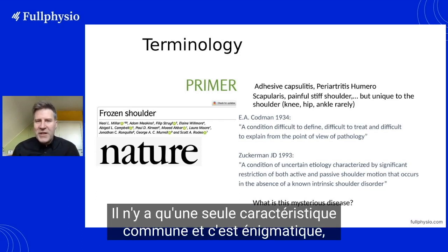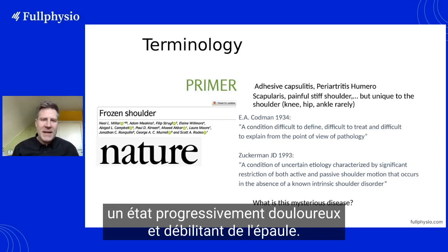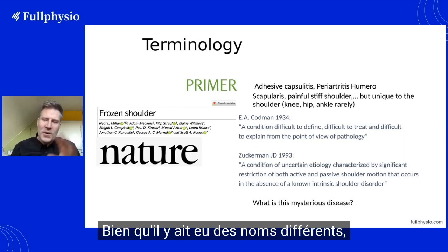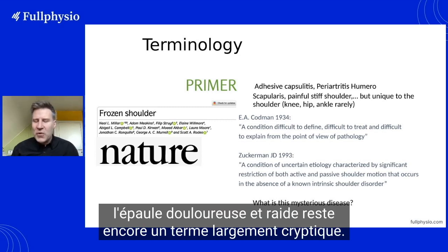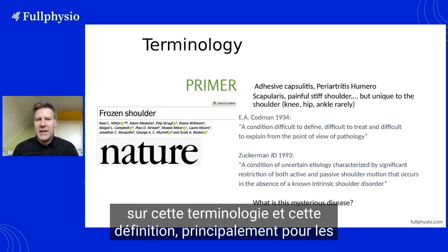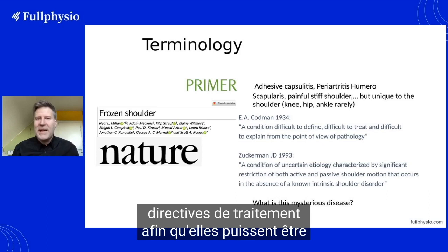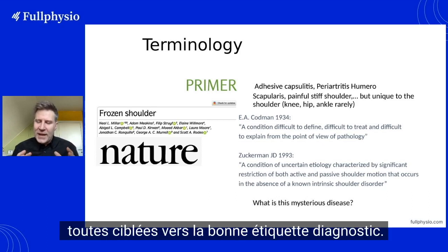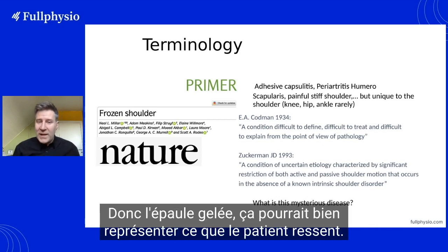There is just one common feature: it's an enigmatic, progressively painful and debilitating condition of the shoulder. Although there were different names, the painful and stiff shoulder still remains a largely cryptic term. It seems essential to gain consensus on this terminology and definition, mainly for treatment guidelines, so that they can all be targeted towards the right diagnostic label.